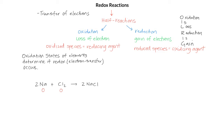Now let's look at sodium chloride. We know that since sodium is in group 1A of the periodic table, its oxidation state is plus one, and chlorine is a halogen in group 7A, and its oxidation state is minus one. Now that we have the oxidation states, let's look at how they change from reactants to products.